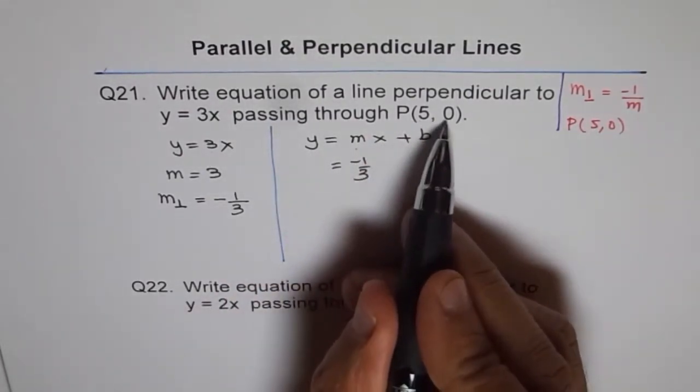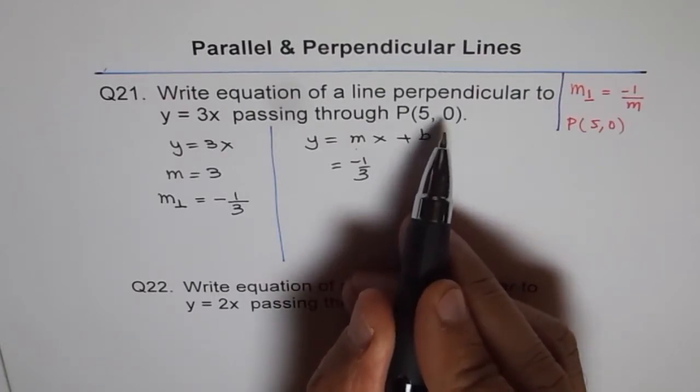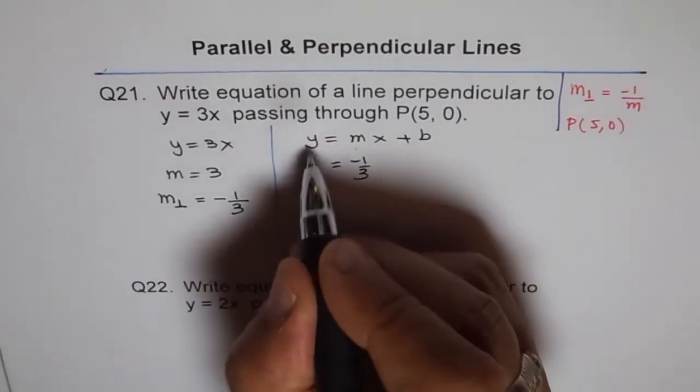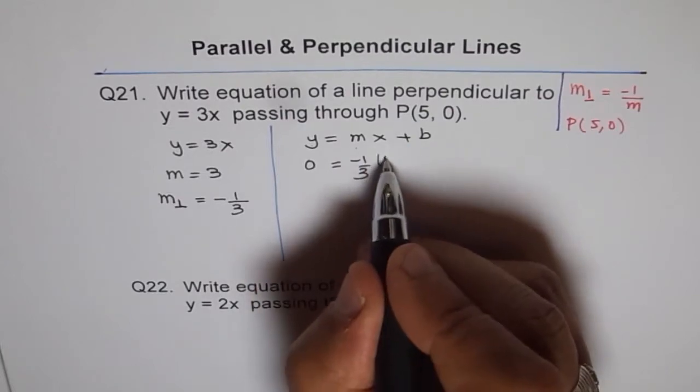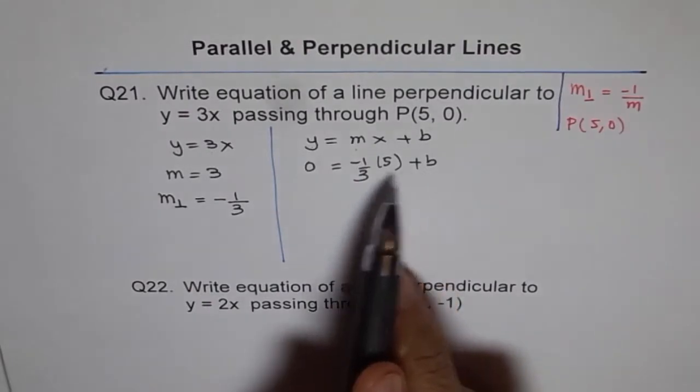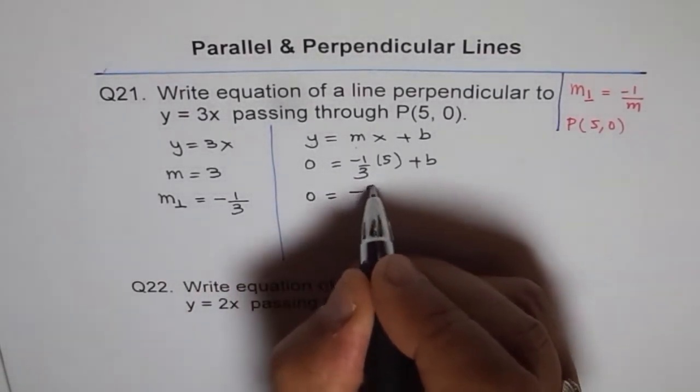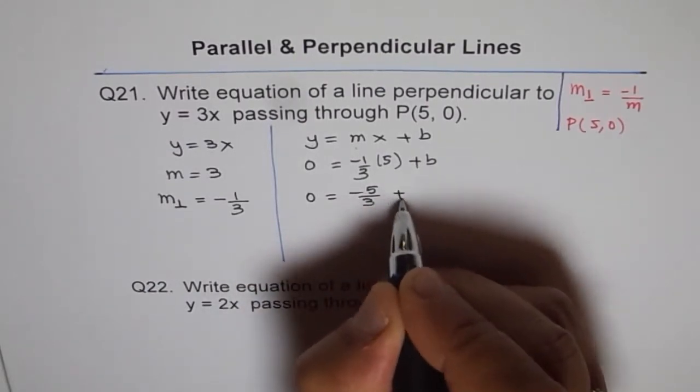x and y is from the point. 5 is the x value and 0 is y value. So we'll write 0 for y and for x, I'll write 5 plus b. Correct? There is only one variable we can solve for it.